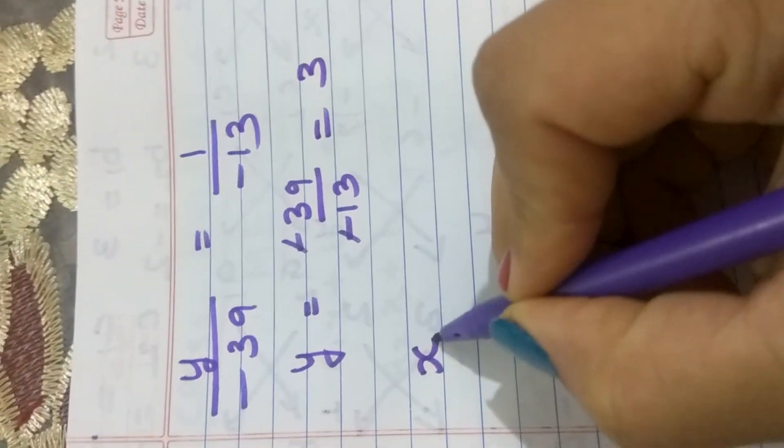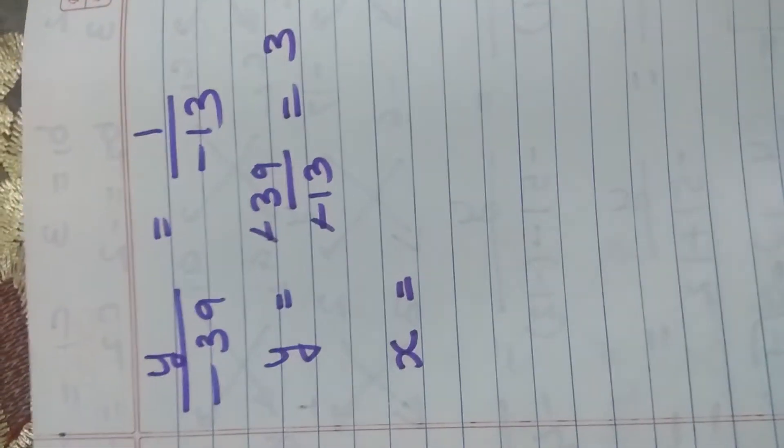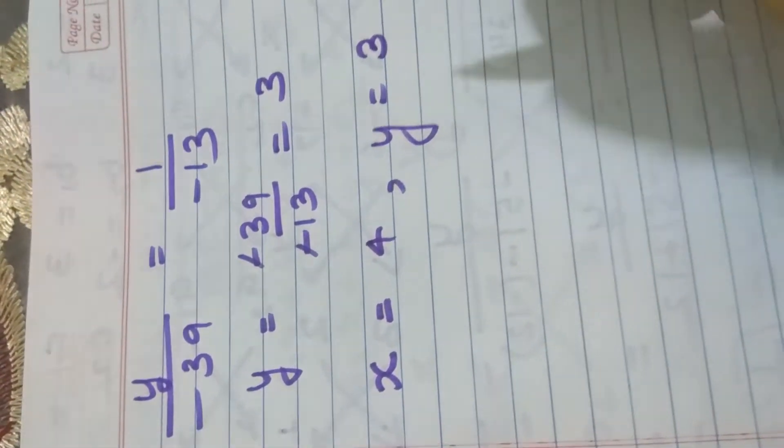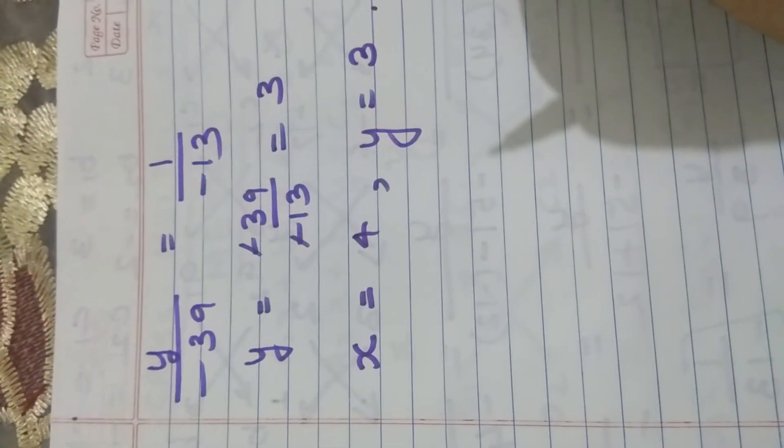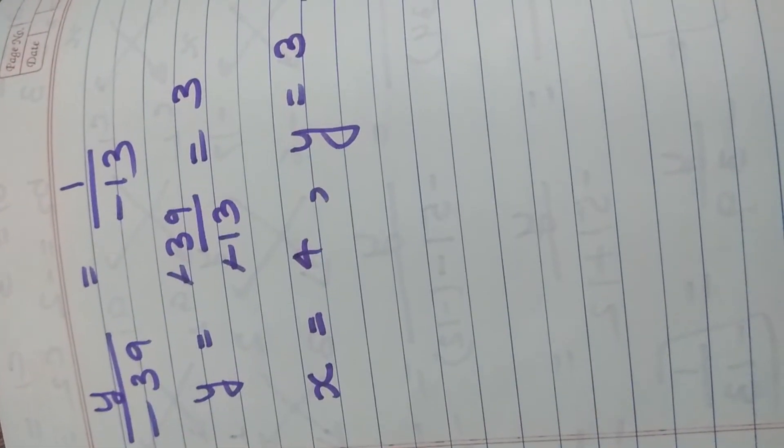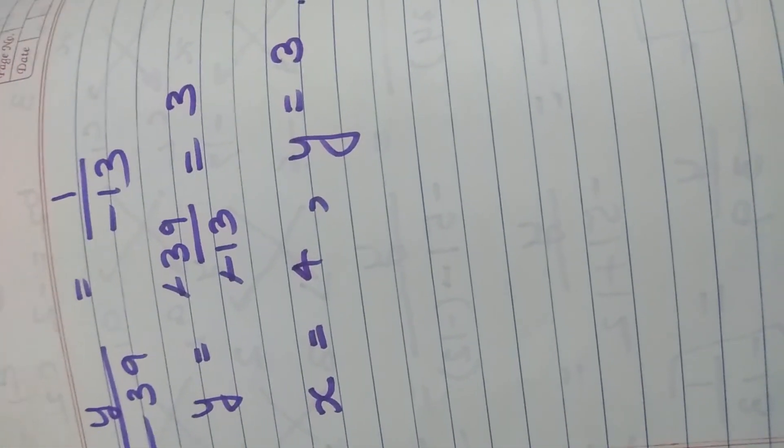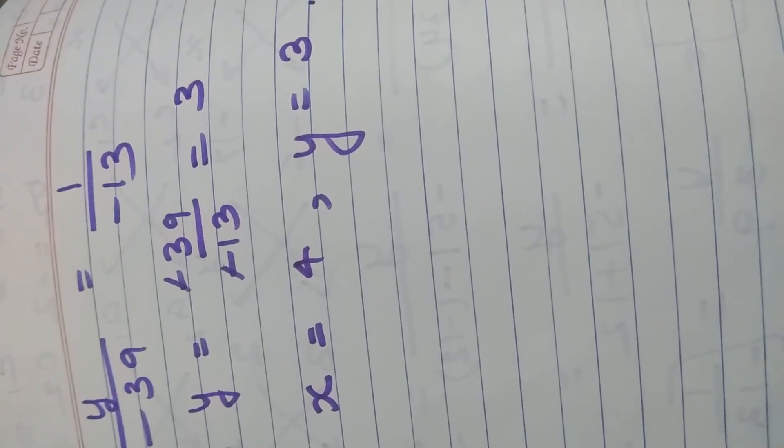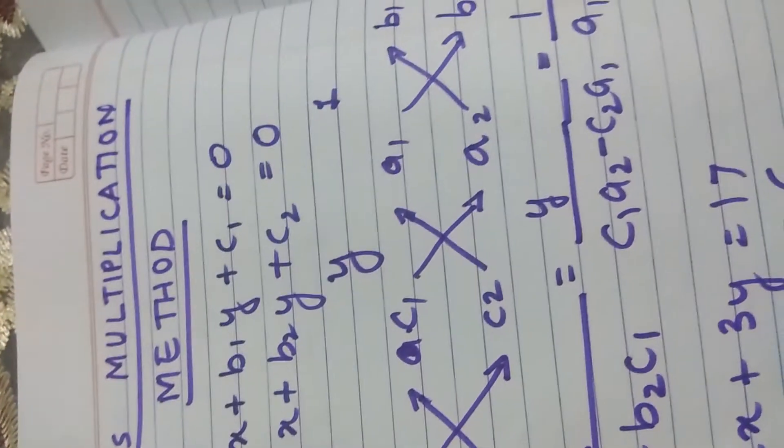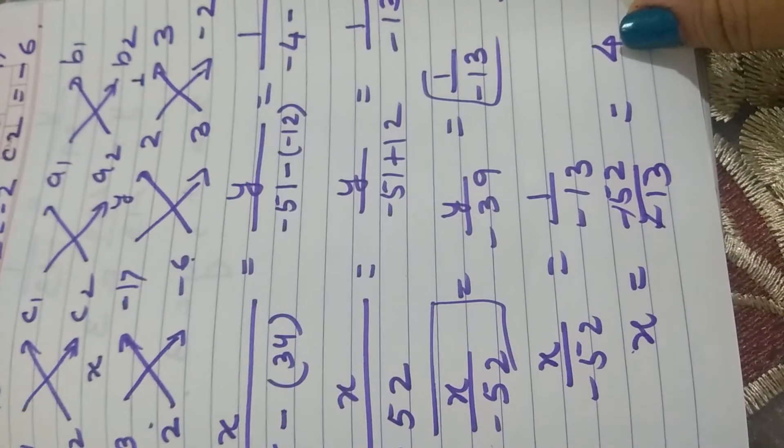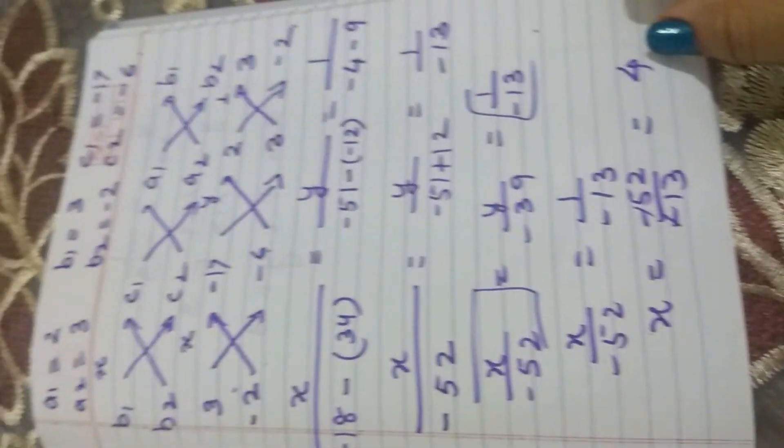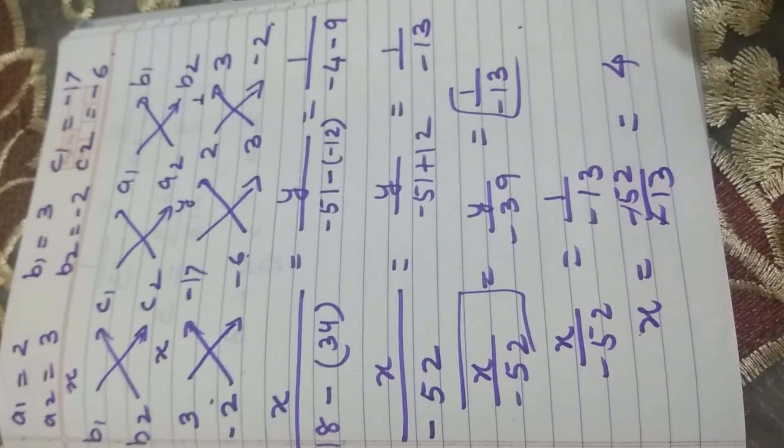Thus, I get the values x is equal to 4 and y is equal to 3. This is the solution. Now you can solve questions based on the cross multiplication method. Thank you.